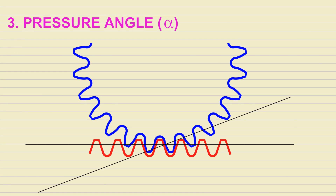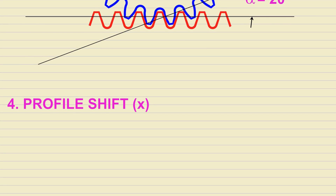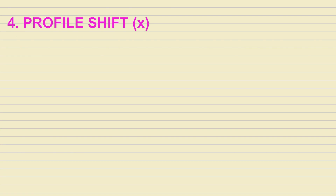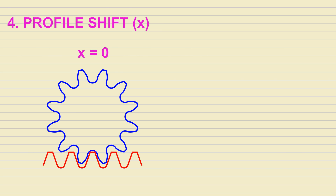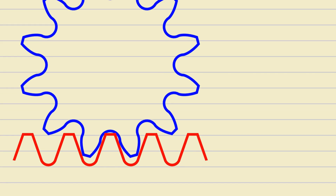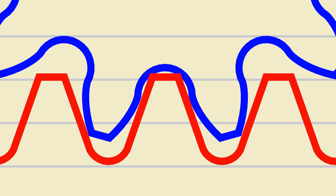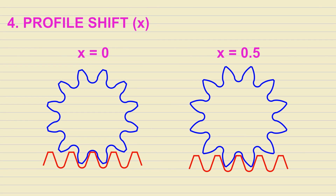The third parameter is Pressure Angle, which is normally 20 degrees. The fourth is Profile Shift. When the number of teeth on the pinion is 18 or less, the standard semi-circular gaps between the teeth are not deep enough to accommodate the teeth of the mating rack. A positive profile shift sharpens the tooth profile, increases the mounting distance between the pinion and rack, and eliminates the overlap.